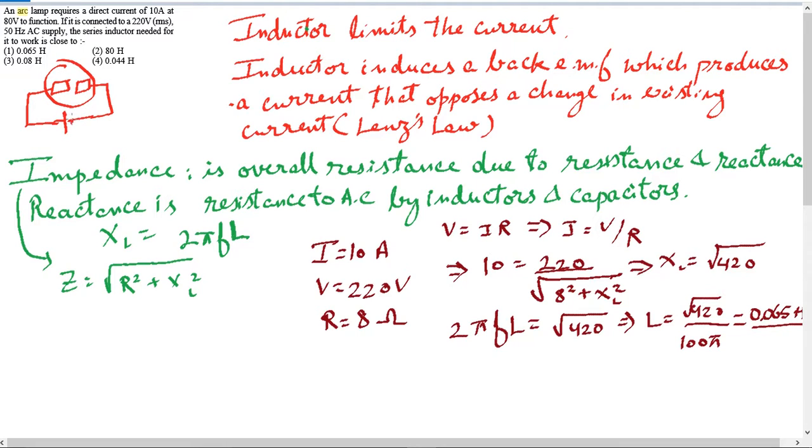So now the question says that 80 volts DC supply was originally connected and the current was 10 amperes for it to work. So now they've decided to change it. Now they want to connect 220 volts RMS AC supply and they have introduced an inductor.